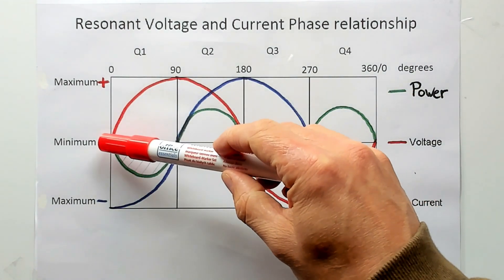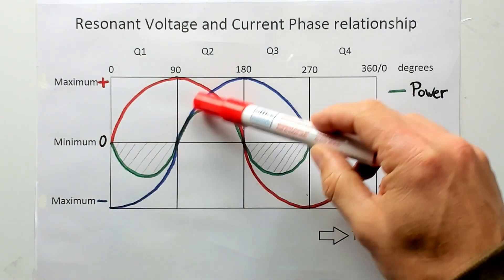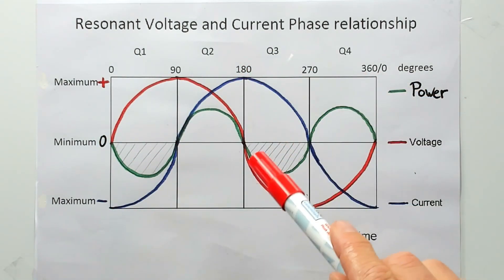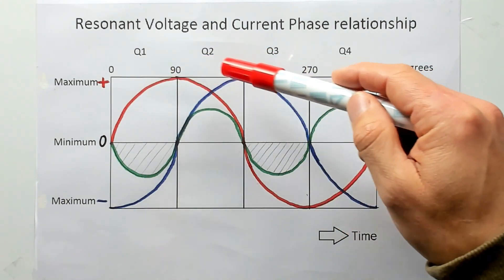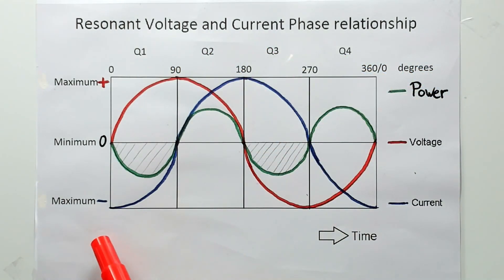And note that the voltage and the current are 90 degrees out of phase. This means they are not maximum at the same moment in time as this the time axis.